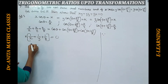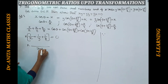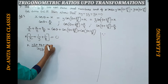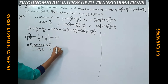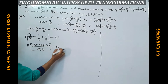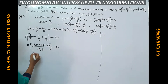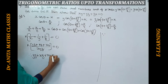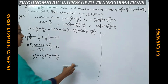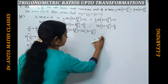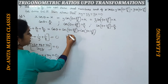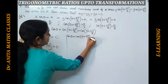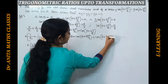Taking xyz as LCM: (yz + xz + xy) / xyz = 0, so yz + xz + xy = 0, which is what we needed to prove. Now let us show why cos θ + cos(θ + 2π/3) + cos(θ + 4π/3) = 0. Note that 2π/3 is 120 degrees, and 4π/3 is 240 degrees.